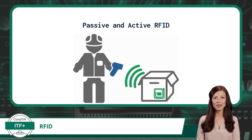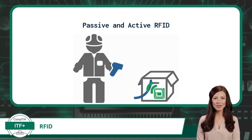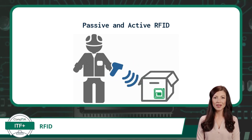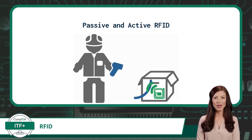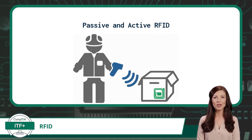RFID systems can be either passive or active in nature. Passive RFID systems consist of an RFID tag and reader, where the tag relies on the reader's energy, in the form of electrical inductance, to power and transmit its stored information.